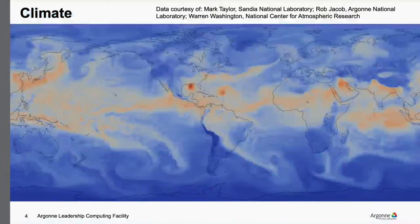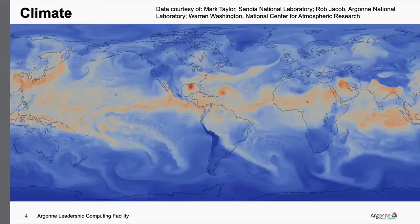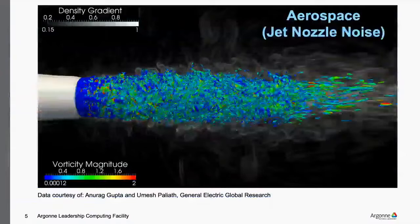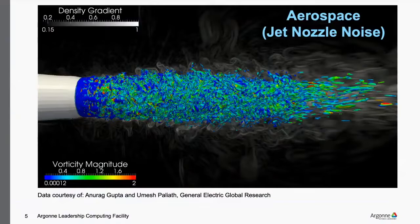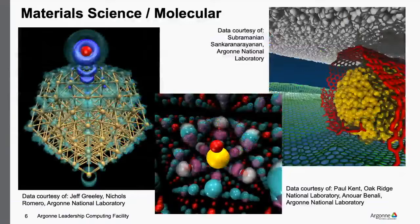This is a climate example — a very high-resolution global climate model. They start with observed data, calculate their models, march forward, and then compare their computed results against observed data. This next example is from GE — in addition to users from national labs and academia, we also have commercial users. This is noise from a jet engine nozzle that they're interested in, in order to not only reduce noise pollution but also improve efficiency.